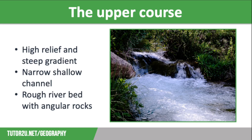The riverbed is rough with large angular rocks on the bed. Erosion in the upper course is mainly vertical and the process of hydraulic action. Transportation in the upper course is mostly traction, with large boulders rolled along the riverbed, and deposition occurs in the upper course with large boulders dropped.